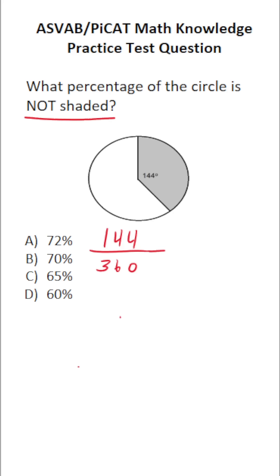So we're going to reduce this fraction to determine what fraction of the circle is shaded, and then we'll find the fraction that is not shaded. These have a common factor of 12. 144 divided by 12 is 12. 360 divided by 12, or 36 divided by 12, is 3. Just tack on that 0.